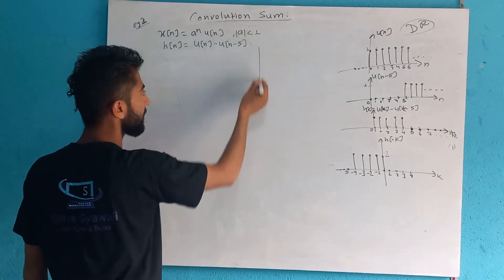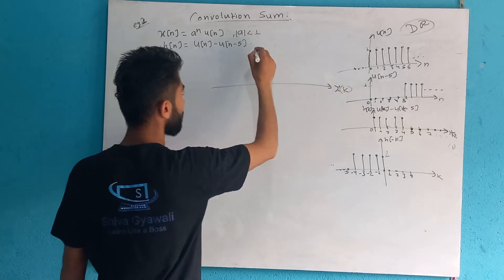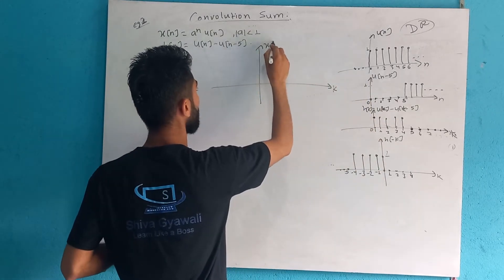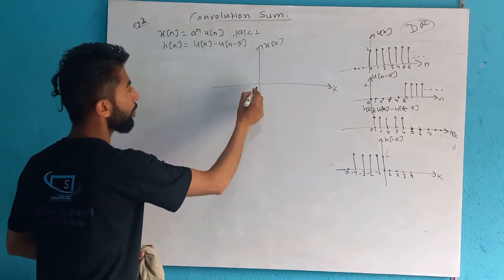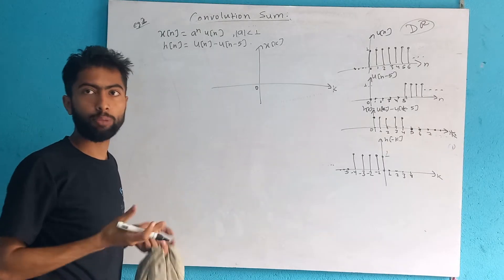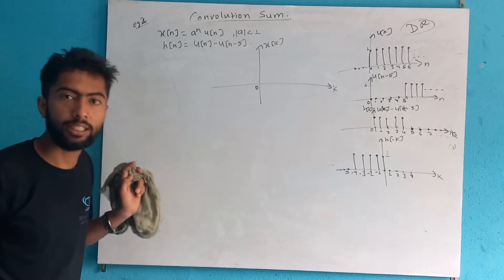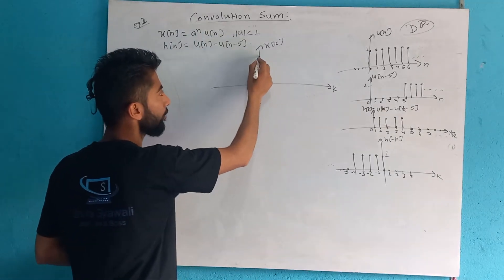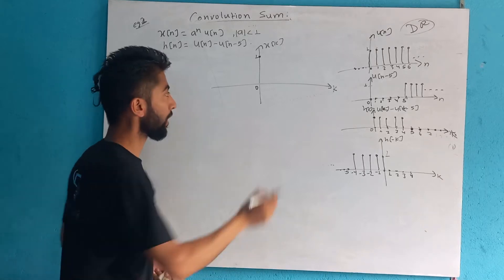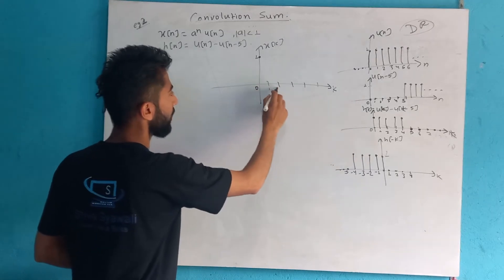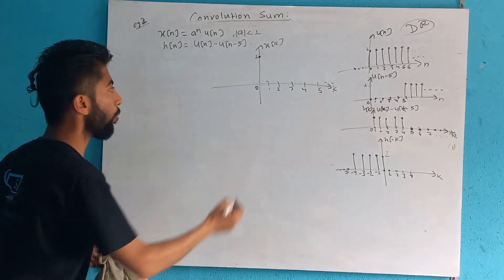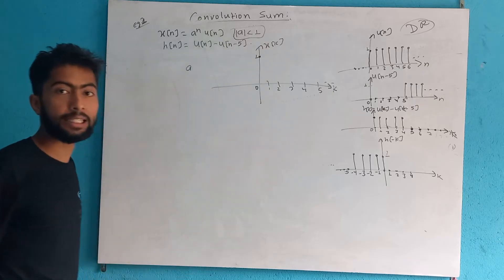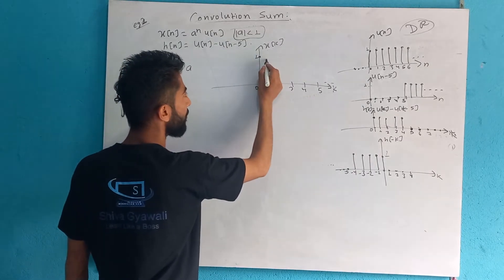We have to draw it. Now I am drawing x[k]. This is k and this is x[k]. Now k value is 0. a to the power of k is equal to x[k]. If k is equal to 0, it is equal to 1. So k is equal to 1. If k is equal to 0, it is equal to 1. 1, 2, 3, 4, 5. Now, what value of k is equal to a? If the magnitude of a is less than 1, and k is equal to 1, it is equal to a.